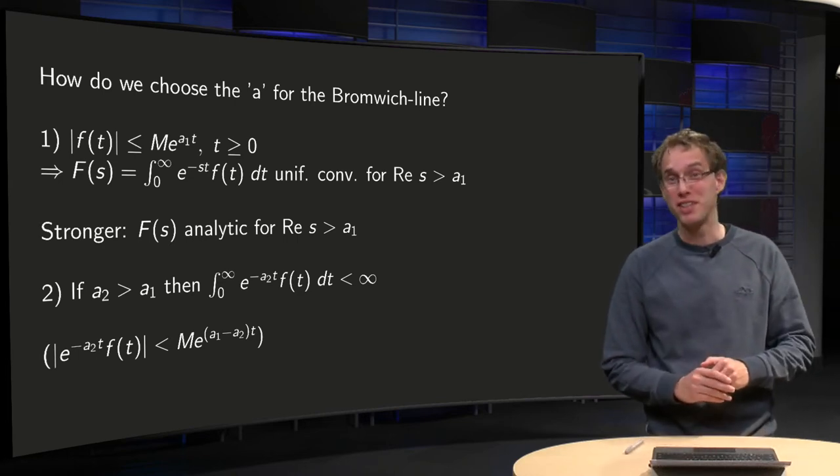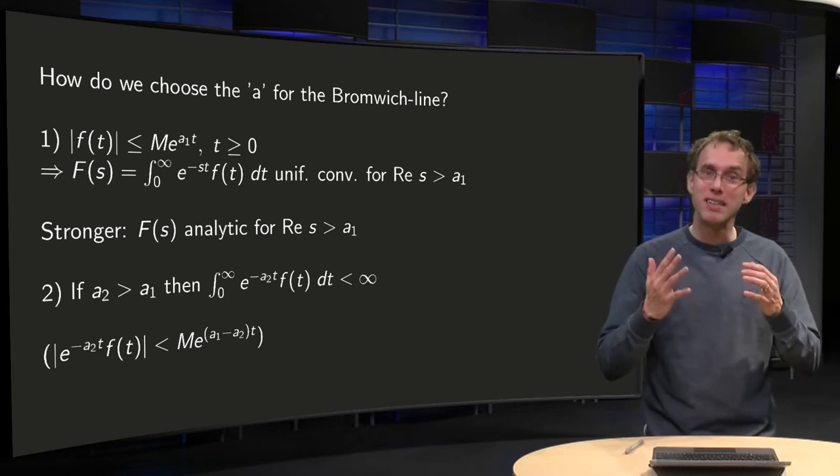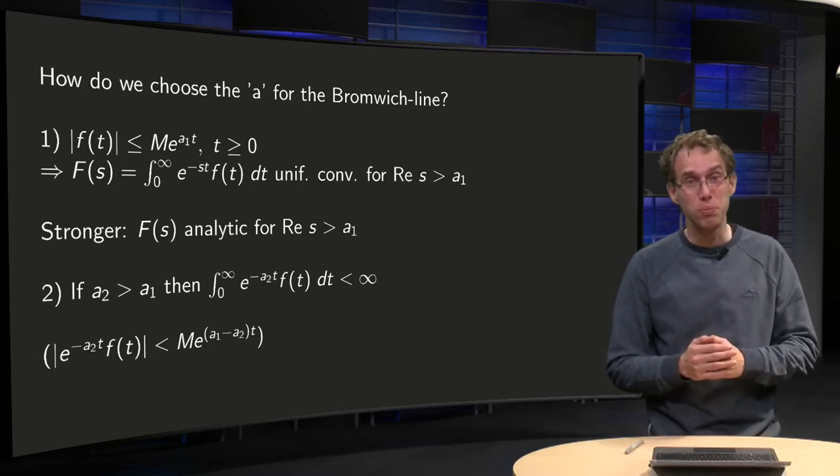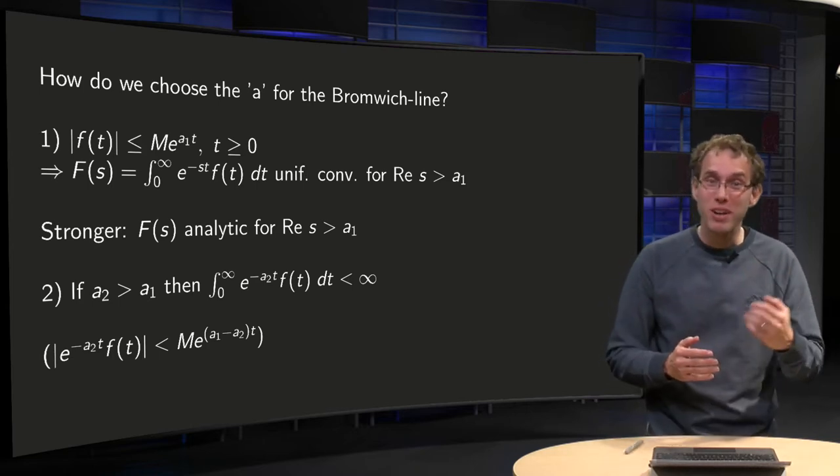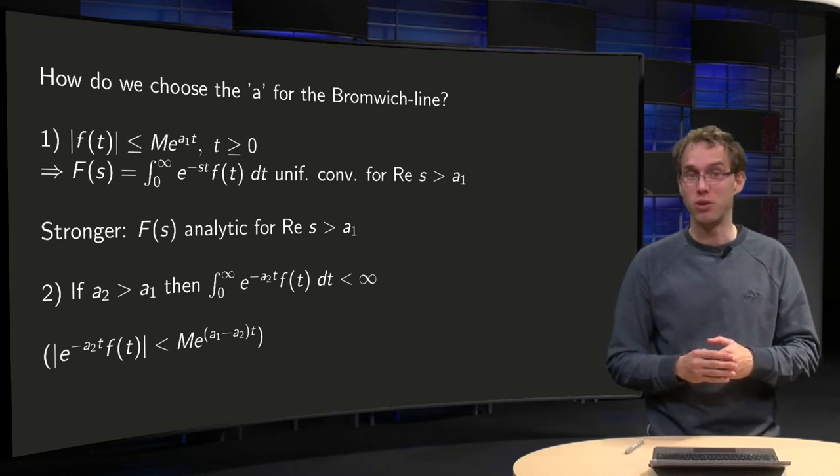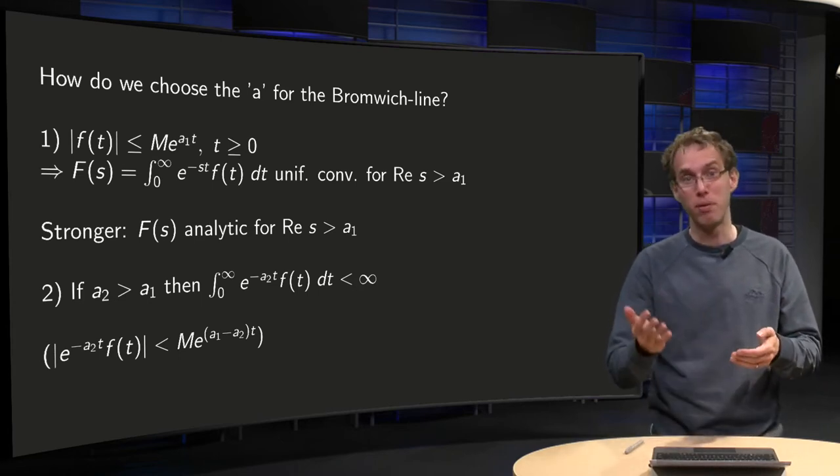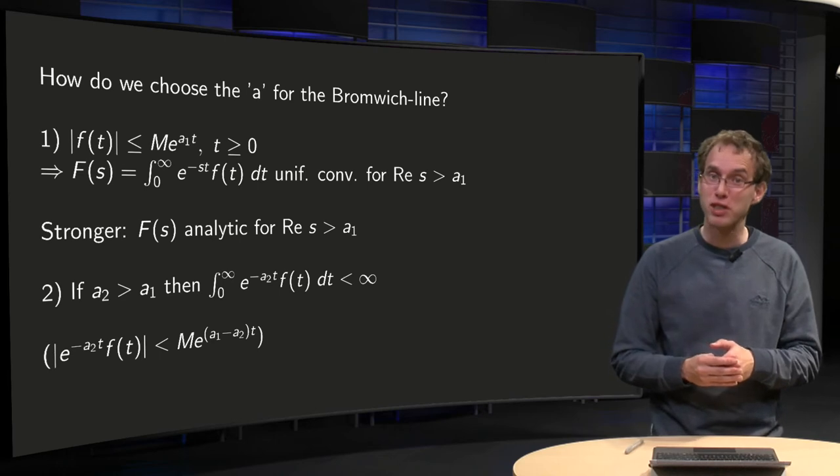In the Bromwich line, you have the real constant a, but how can you find out what this a should be? Well, you know that a has to be chosen such that the integral of f times e to the power minus a times t converges.